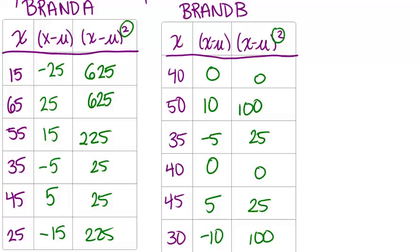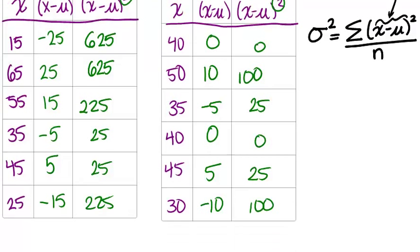Remember that the formula for variance for a population is the sum of all of the differences between our x values and our mean squared. And we already have all of these values in our table. So we just have to add them up next and then divide by n, which will be six in this case. So the next thing we have to do is find the sum of the last column in each table. And then once we figure that out, we just have to divide by six.